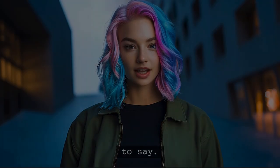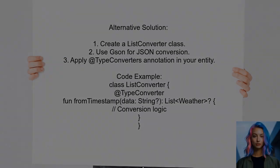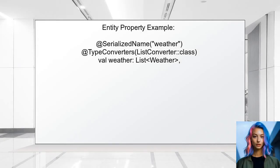Another alternative solution involves using a ListConverter class. This class utilizes JSON to convert a list of weather objects to a JSON string and vice versa. By applying the @TypeConverters annotation, you can easily manage the serialization of your list within the entity. In the entity, you can define a property for the weather list and annotate it with @SerializedName and @TypeConverters. This allows Room to automatically handle the conversion when querying the database.